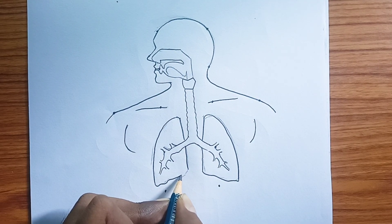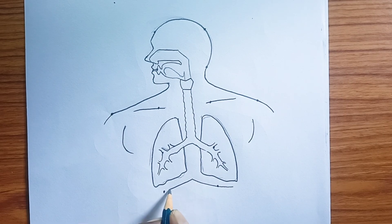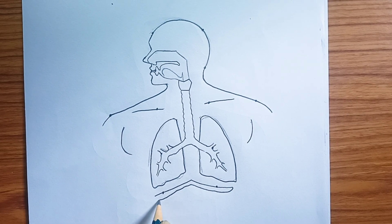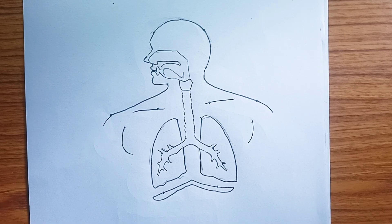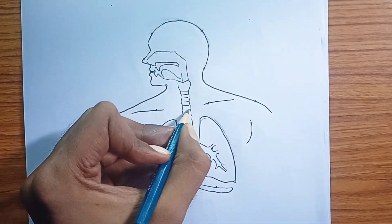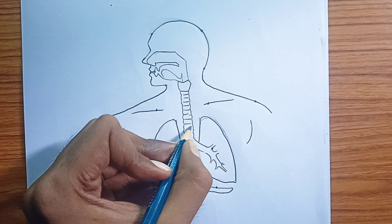The trachea then branches into two main tubes called bronchi, one for each lung. These bronchi further subdivide into smaller and smaller tubes within the lungs, like the branches of a tree. These smaller tubes are called bronchioles.